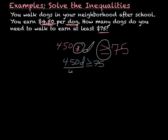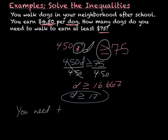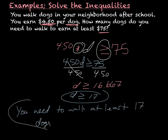Then I divide by four fifty, and I get D is greater than or equal to sixteen point six, six, seven, repeating. Now I can't walk half a dog — it's either a whole dog or no dog. So I round up, because it has to be bigger than sixteen point six repeating, and I can't go down to sixteen, so I go up to seventeen. You need to walk at least seventeen dogs to earn seventy-five dollars.